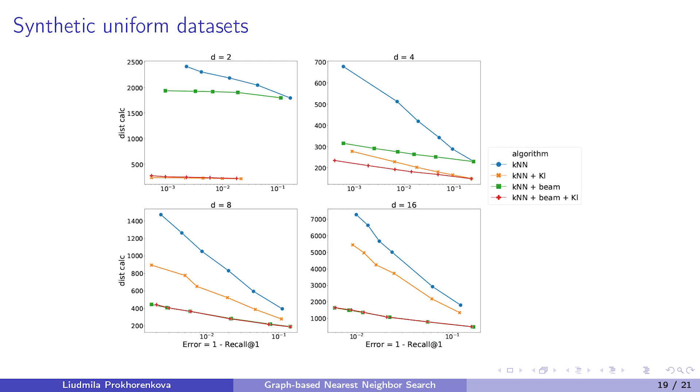Let me empirically illustrate the theoretical results discussed before. Here, the synthetic datasets are uniformly distributed over a d-dimensional sphere for various values of d. Each plot shows the trade-off between the error rate and the number of distance calculations. Better algorithms are located closer to the bottom-left corner. The blue curve marked with circles corresponds to the greedy search over simple nearest neighbor graphs. The orange curve with crosses shows the effect of long edges. As expected, long edges significantly help on dense datasets and have much smaller effect on sparse ones. The green curve with squares shows the effect of beam search. In contrast, beam search is extremely important for sparse datasets, while for dense ones the best results can be achieved even with greedy search.